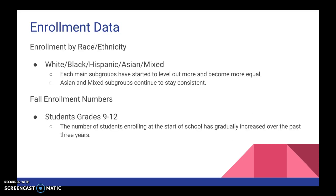Enrollment is also broken down by race and ethnicity and by fall enrollment numbers. In the race and ethnicity area, the subgroups — white, black, Hispanic, Asian, and mixed — have started to level out from 2015 to 2016–2017 and have actually become more equal. Asian and mixed subgroups stayed consistent because the numbers are so low. As for fall enrollment by grade, the number of students enrolling at school has gradually increased over the past three years, as indicated by the table.